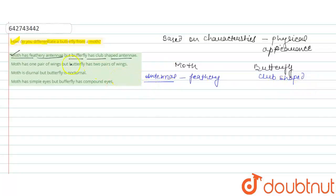Okay, so according to this we can say that the first option is the correct answer, because moth has feathery antennae and butterfly has club-shaped antennae. So let's proceed to the next option, which is: moth has one pair of wings but butterfly has two pairs of wings. No, both have two pairs of wings.